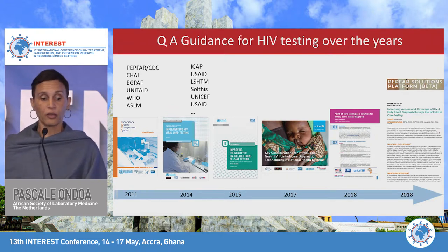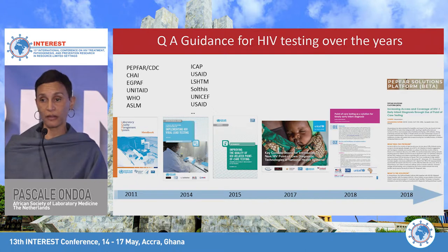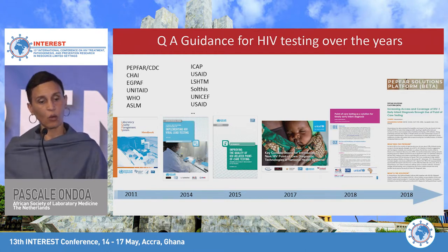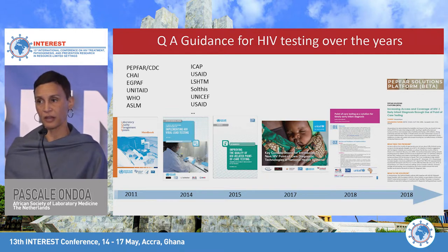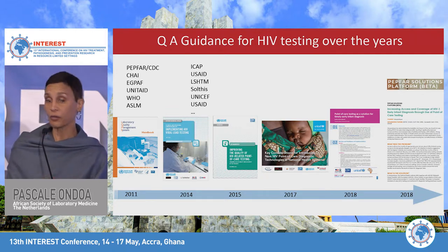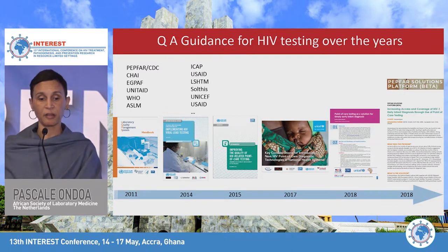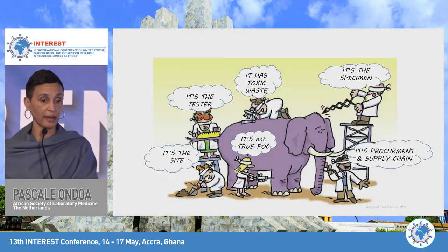Quality assurance is important and you can see that from 2011 when ASLM was born to date, there are many guidelines and manuals that have been developed and disseminated. They can address the whole laboratory, or specifically look at HIV testing, point of care, or early infant diagnostics, using new technology and the internet for dissemination. Many stakeholders have provided input to this guidance.